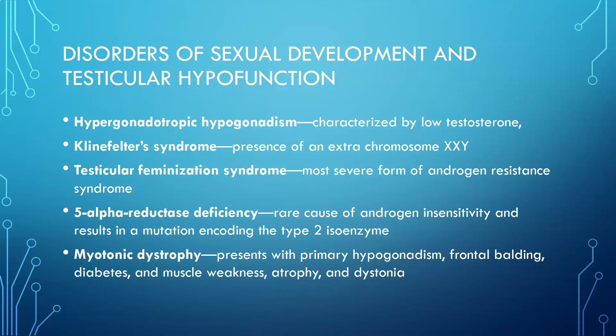There are several disorders of sexual development and testicular hypofunction. The first one is hypergonadotropic hypogonadism, characterized by low testosterone. You have too much of the gonadotropic hormones, so high levels of GnRH and possibly LH and FSH, but then there's no response from the gonads, and so there's no testosterone that's produced.